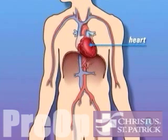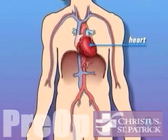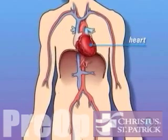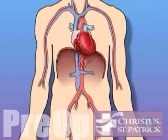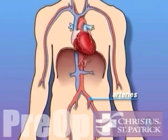The heart is located in the center of the chest. Its job is to keep blood continually circulating throughout the body. The blood vessels that supply the body with oxygen-rich blood are called arteries. The arteries that supply blood to the heart muscle itself are called coronary arteries.